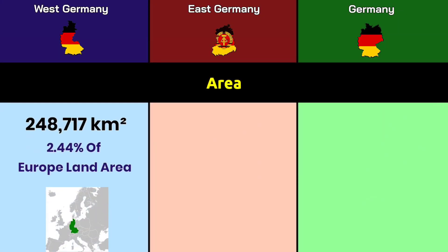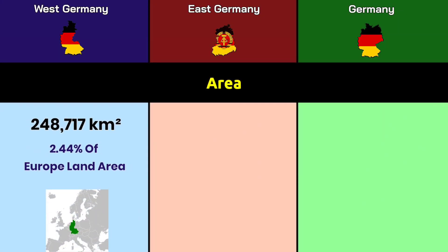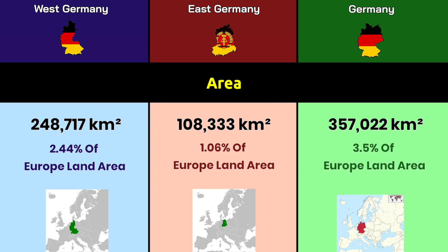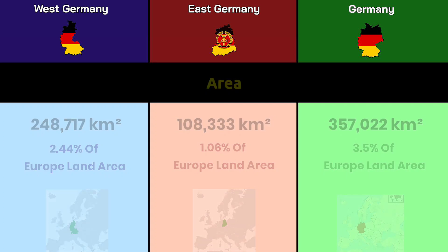Area: West Germany had nearly 249,000 square kilometers, East Germany had more than 108,000 square kilometers, and the Federal Republic of Germany has more than 357,000 square kilometers.